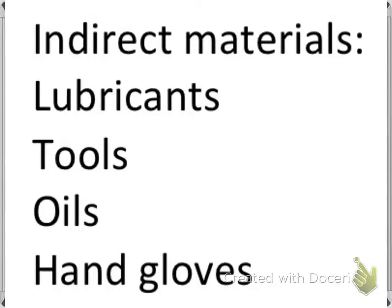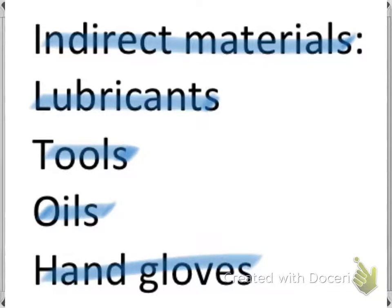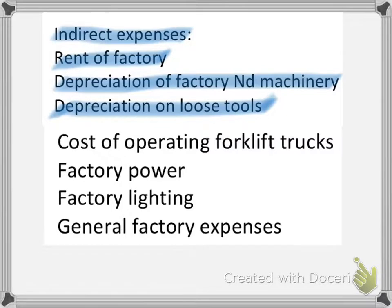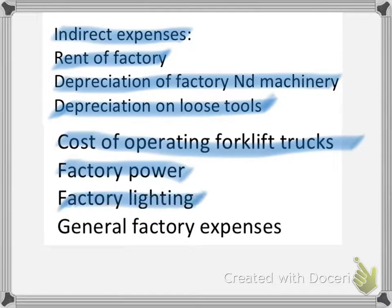Under indirect materials come lubricants, tools, oils, and hand gloves. Other indirect costs include the cost of operating forklift trucks, factory power, factory lighting, and general factory expenses.